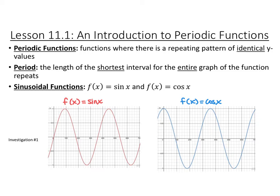The period is the length of the shortest interval for a repeat, so basically how long it takes for one of those patterns to happen. Two examples of periodic functions are sinusoidal functions, which is f of x equals sine of x and f of x equals cosine of x. So this is f of x equals sine of x, and this is f of x equals cosine of x.